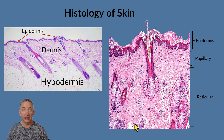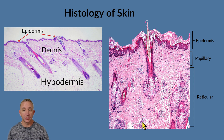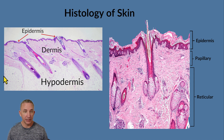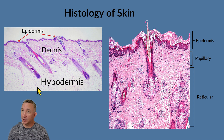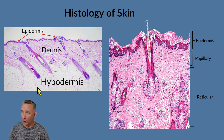The hypodermis is not shown in this image, but remember the primary type of tissue there is adipose tissue — we covered that in a previous video where you could see all those clear white bubbles.